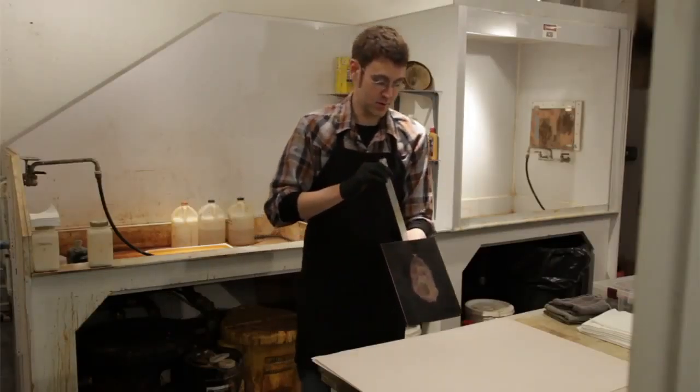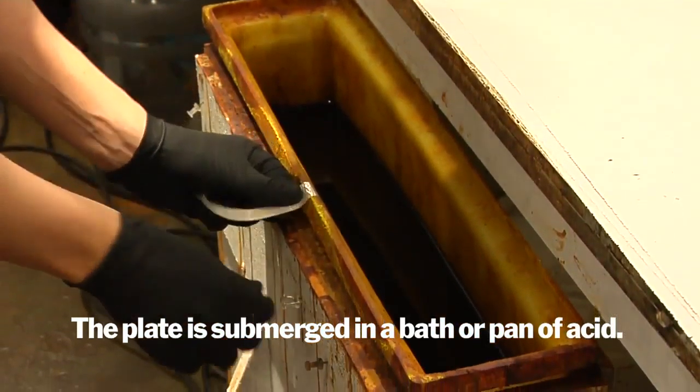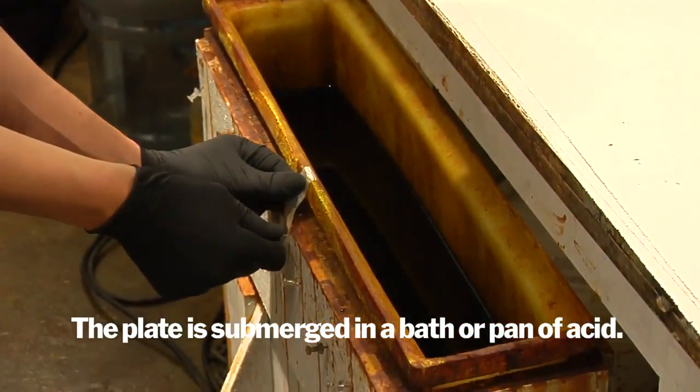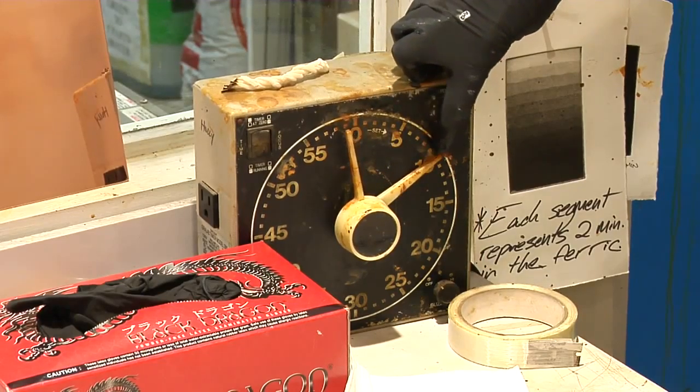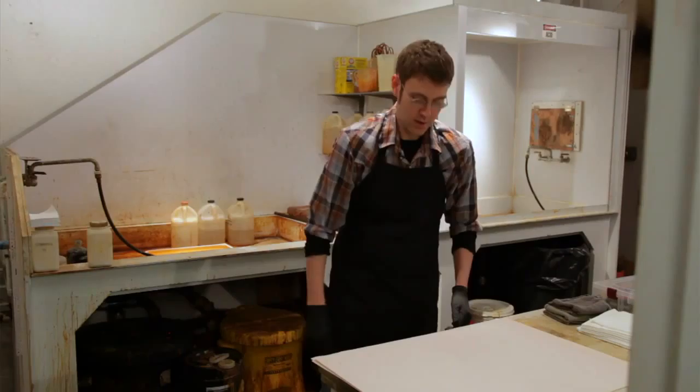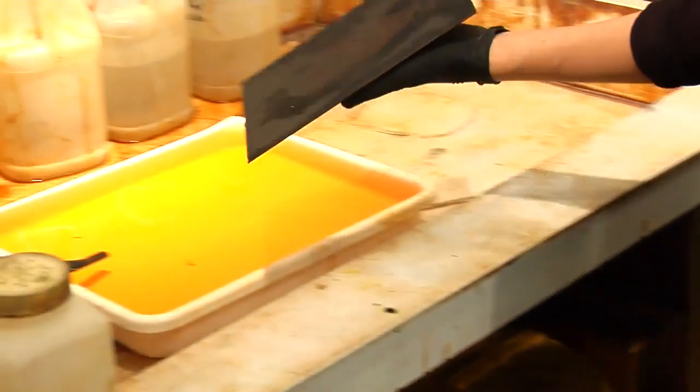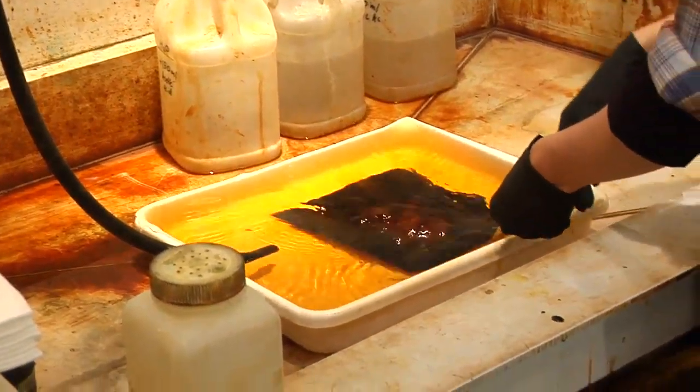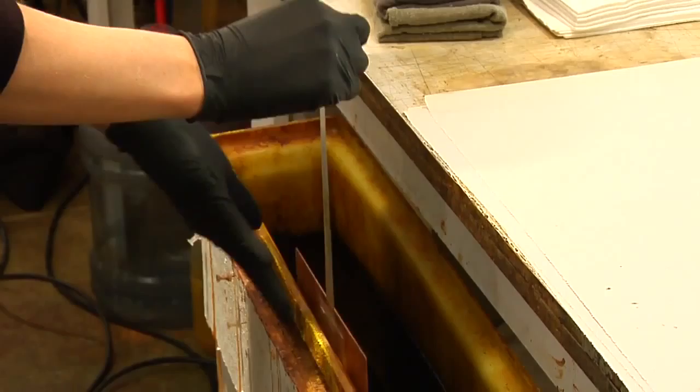The third step in etching is etching the plate. This is a process of eating away all of the bare copper areas showing on the plate deep into recesses that will hold ink. The plate is etched for 15 minutes, then it is pulled out and rinsed and replaced back in the bath for an additional 15 minutes to create a fine even black line.